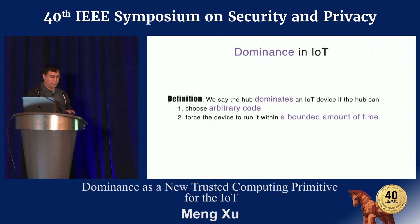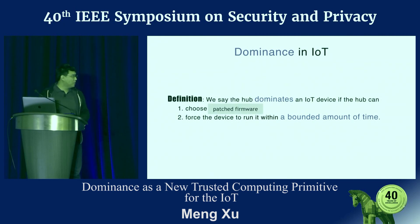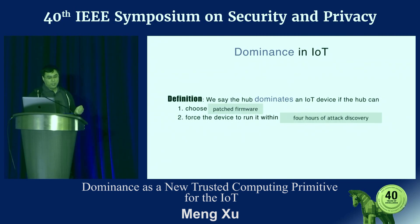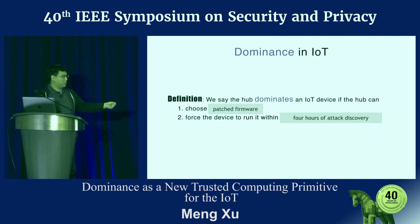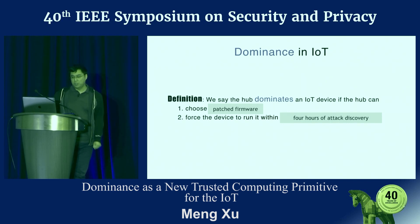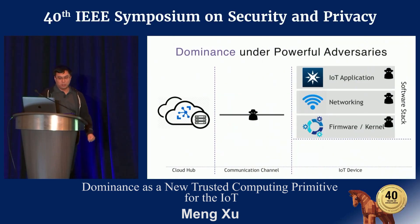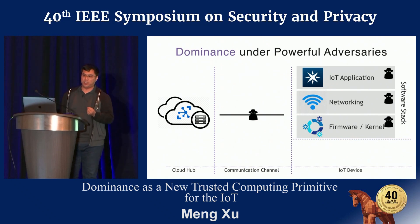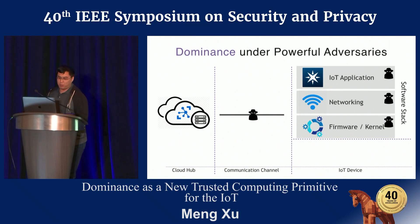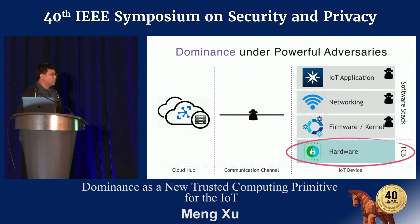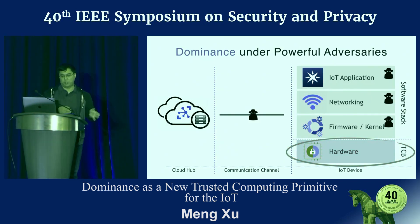In the example where the device is hacked, the arbitrary code can be the patch firmware, and the bounded amount of time could be, say, within four hours of attack discovery. We want to guarantee recovery within four hours. To achieve this under a powerful adversary, we assume a very strong adversarial model: they can compromise your application, hijack your communication, and even root your firmware and kernel. The only thing we trust is the hardware, because you cannot reach the hardware from the software level.